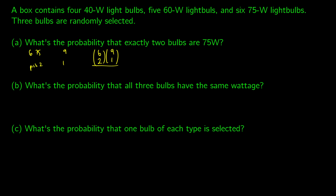Since we're finding a probability, we divide by the total number of ways to pick. There are 15 light bulbs total and we can pick three of them. Six choose two is 15, nine choose one is 9, and 15 choose three is 455. That gives us a probability of 0.2967.